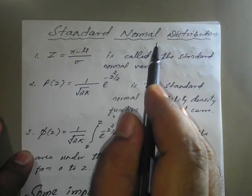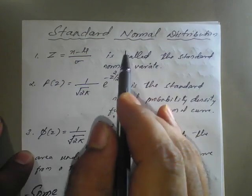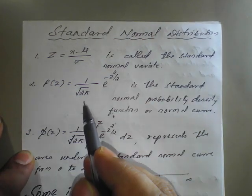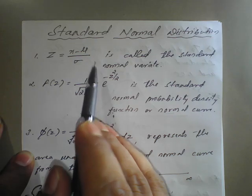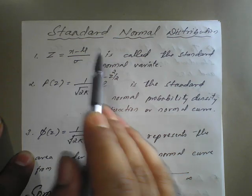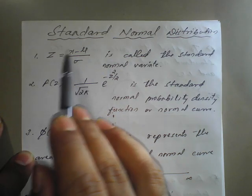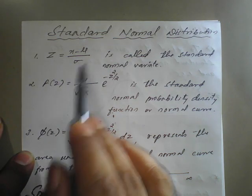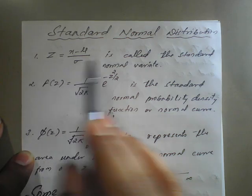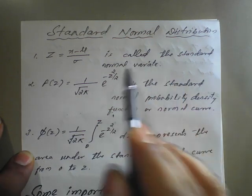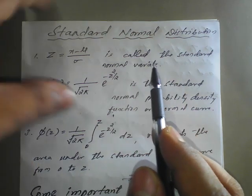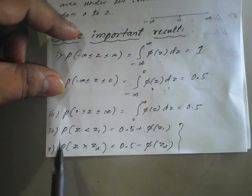A standard normal distribution. We will continue with the examples — this I want to revise. We are going to use Z = (X − μ) / σ, which is nothing but the standard normal variate, and again we will go through the specific formulas.